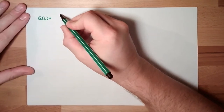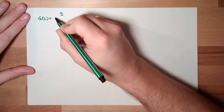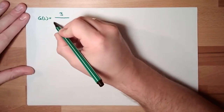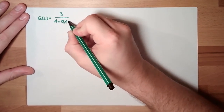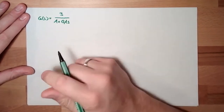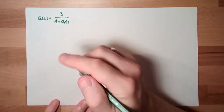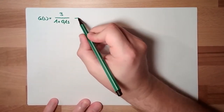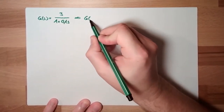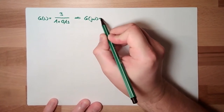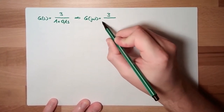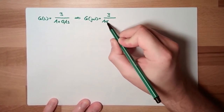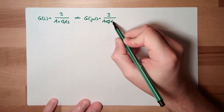This time I will write 3 divided by 1 plus 0.1s. That's my system. So we'll transfer it to j omega, which means we have 3 divided by 1 plus 0.1 j omega.